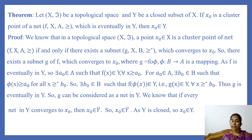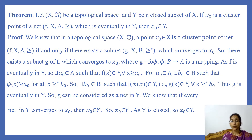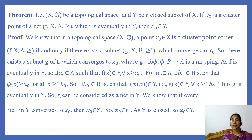Thus g is eventually in Y, so g can be considered as a net in Y. We know that if a net in Y converges to x₀, then x₀ belongs to the closure of Y. Since g converges to x₀, x₀ belongs to closure of Y. As Y is closed, x₀ belongs to Y. This completes the proof.